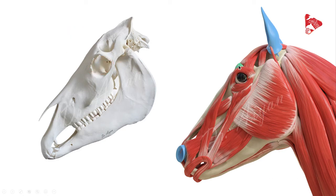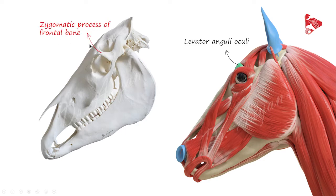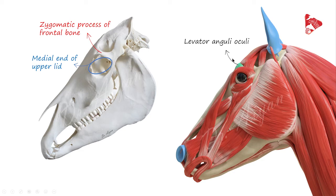The next muscle is a small muscle that extends from the zygomatic process of the frontal bone and inserts to the medial end of the upper lid. It is called the levator anguli oculi medialis, or the medial levator muscle of the upper lid. From its origin and insertion, we can understand that its function is to elevate the medial part of the upper lid.